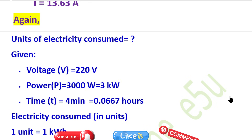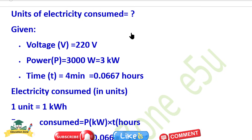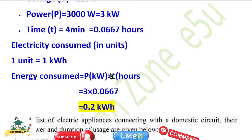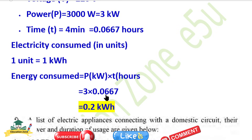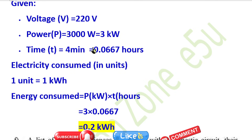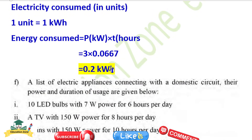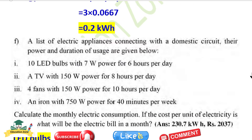For energy consumption: time is 4 minutes = 4/60 hour = 0.067 hour. Energy = Power × Time = 3 kilowatt × 0.067 hour = 0.2 kilowatt-hour.